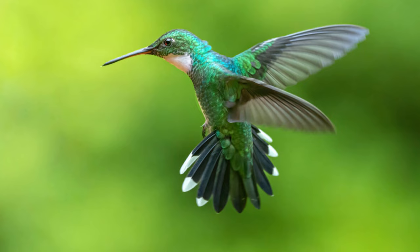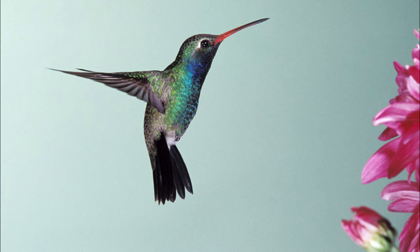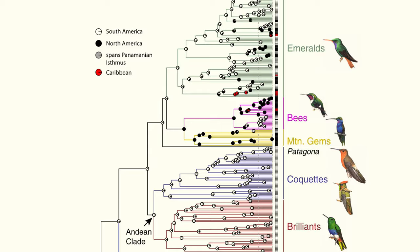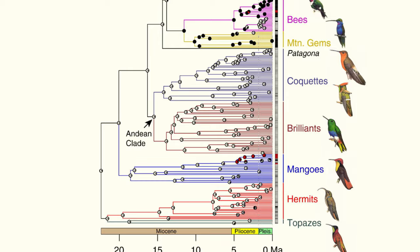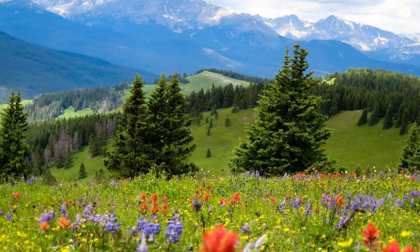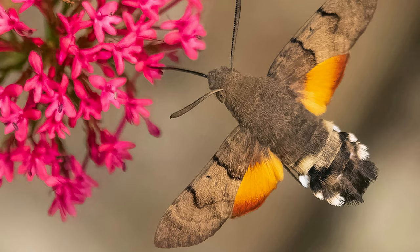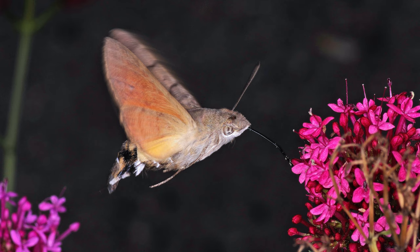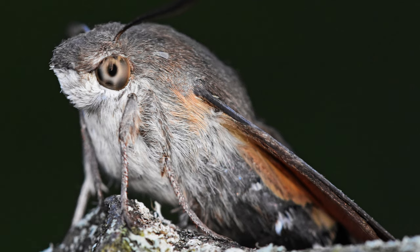Hummingbirds play a big role in North and South American ecosystems, and are known for their massive migrations as well as their extreme metabolisms. There are at least 366 living species, all of which are contained in the Americas. But overseas in Eurasia, another animal buzzes around flowers. At first sight, this might seem to be a hummingbird, but in fact it's a large species of moth, aptly named the hummingbird hawk moth.